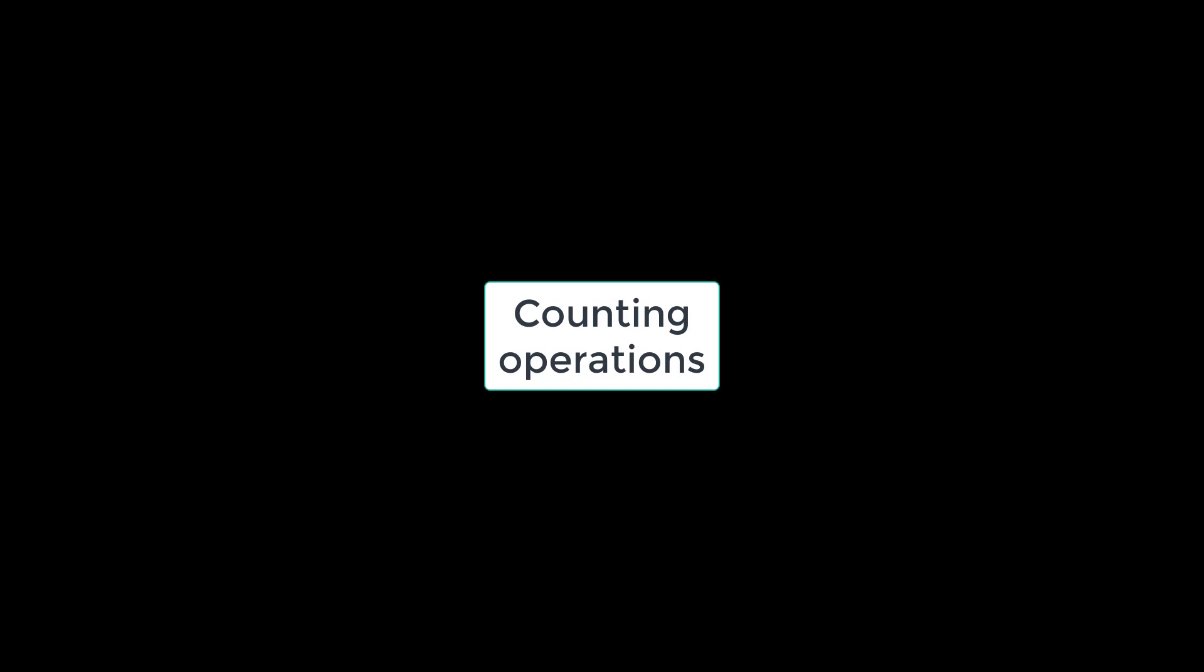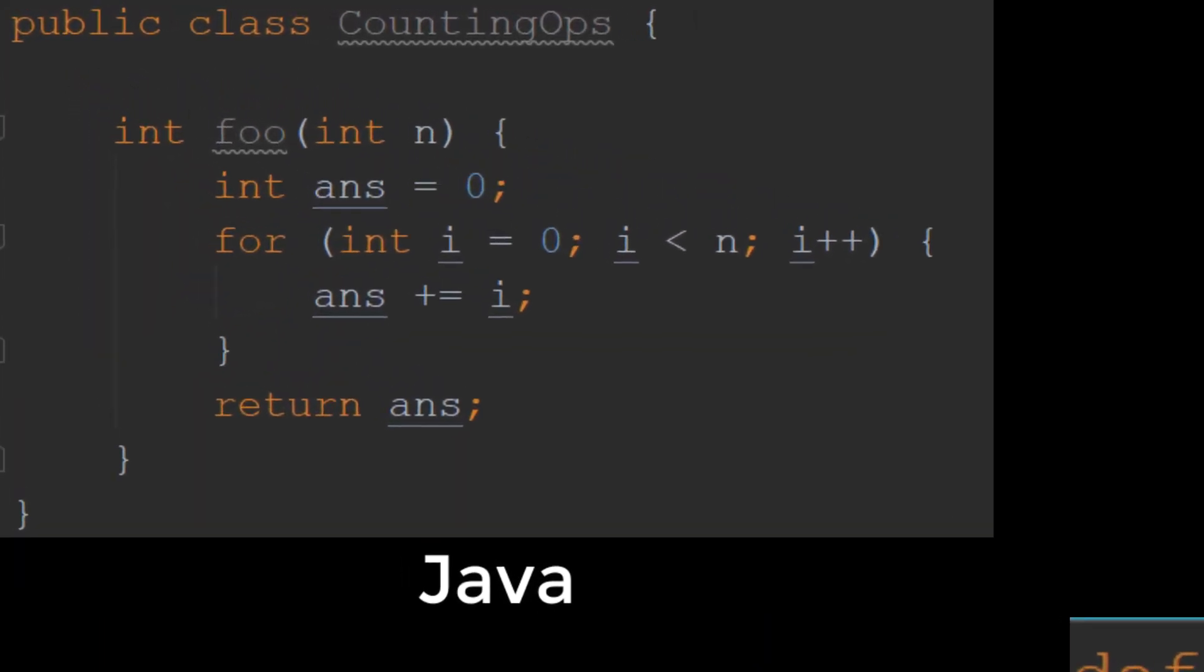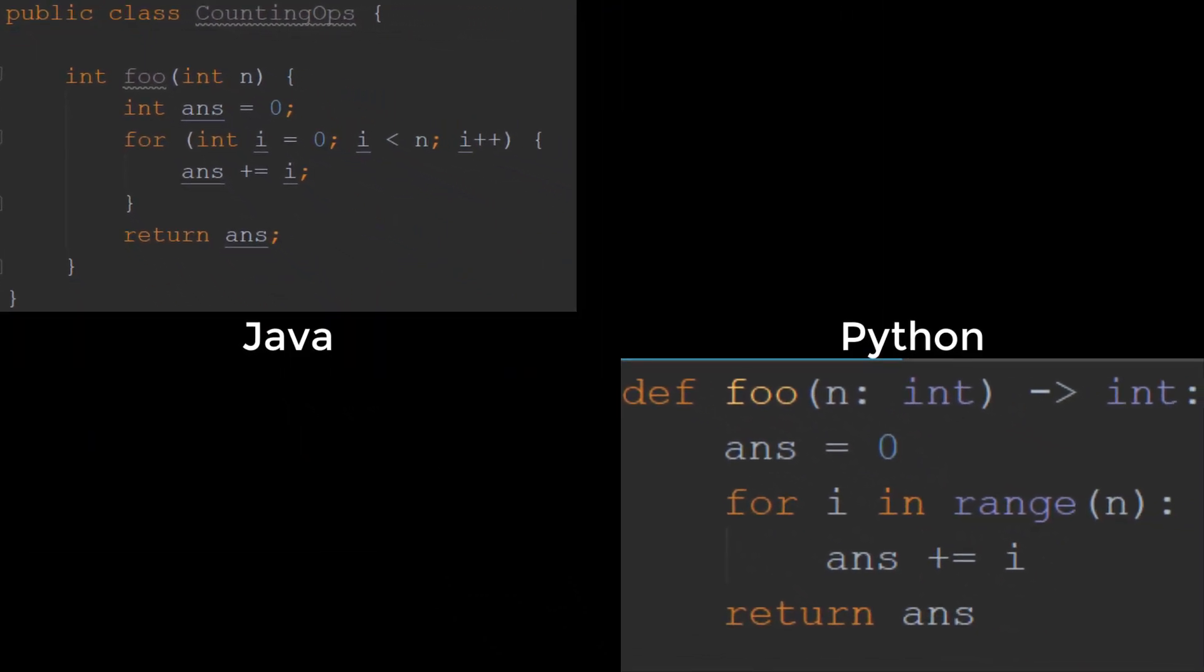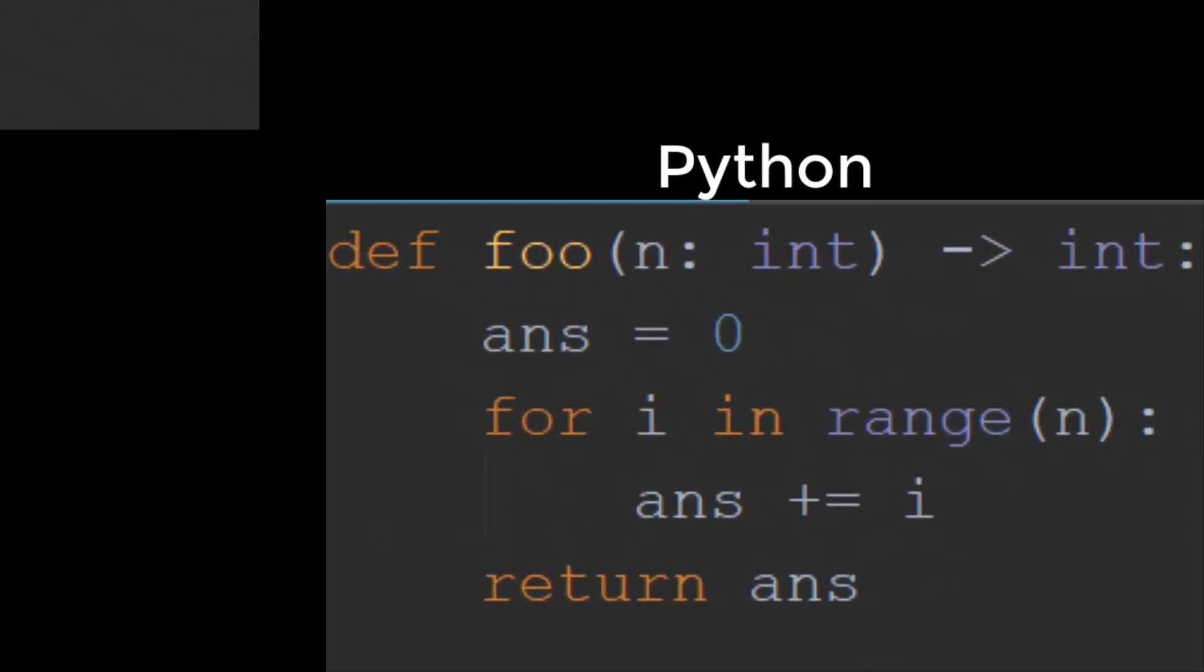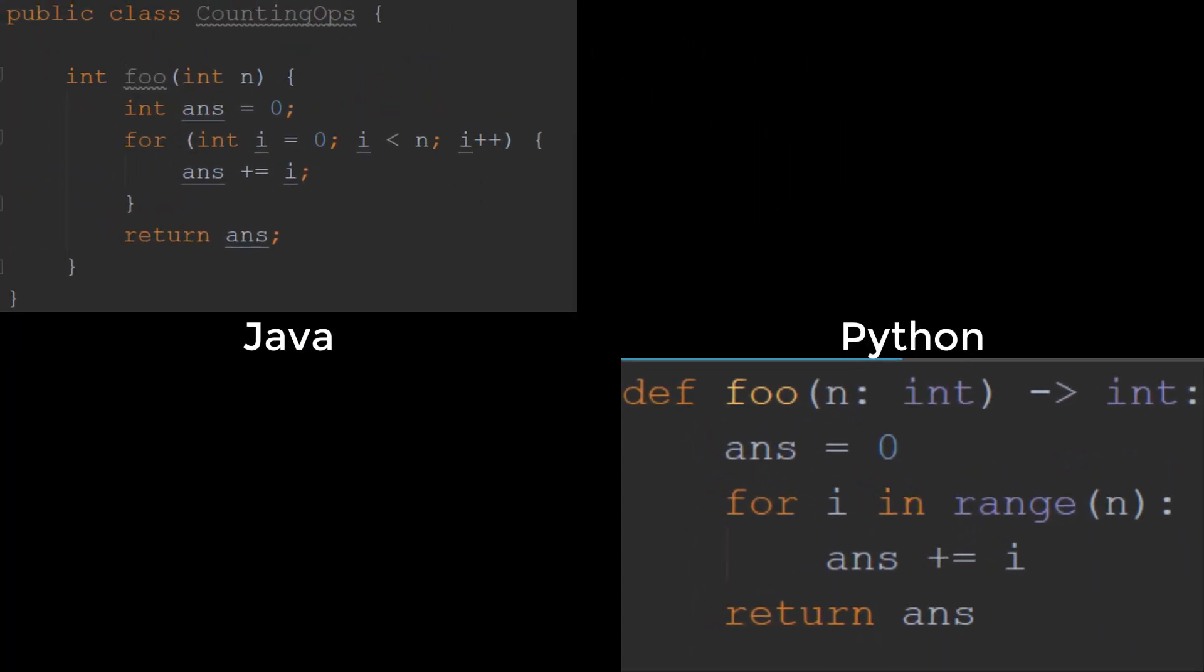So without further ado, let's consider two pieces of code here. One is written in Java and one is written in Python. Depending on what kind of student you are, either a computer scientist or a mathematician, you might find one easier to read than the other. Now in previous courses, the main question you would ask about pieces of code like this is what does it do? Well, take a second and see if you can figure it out.